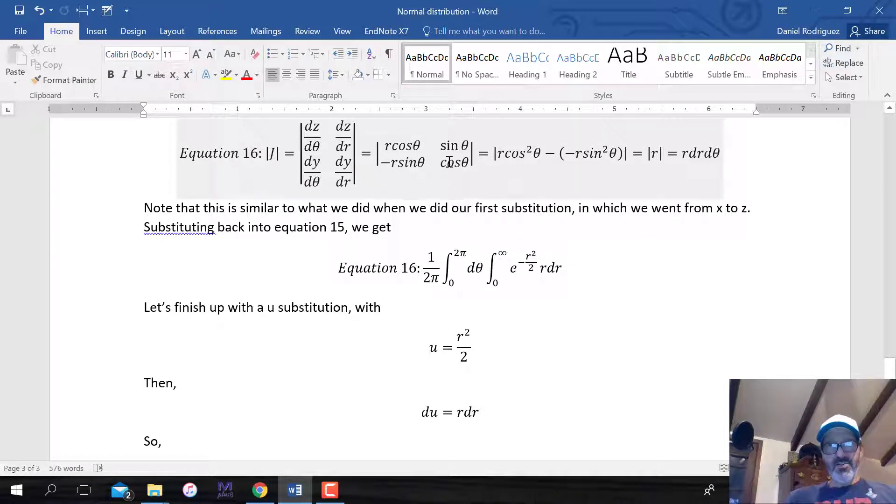The equation for z includes both an r and a theta. So dz d theta is r cosine theta. The derivative with respect to r is sine theta. We also solve for the y equation. We take its derivative with respect to r and with respect to theta. We get minus r sine theta and cosine theta. Getting the determinant is this first cross product, r squared cosine squared theta. Then we subtract this other product. So minus minus r sine squared theta, which gives us r times cosine squared plus sine squared, which equals 1. So we're left with r.